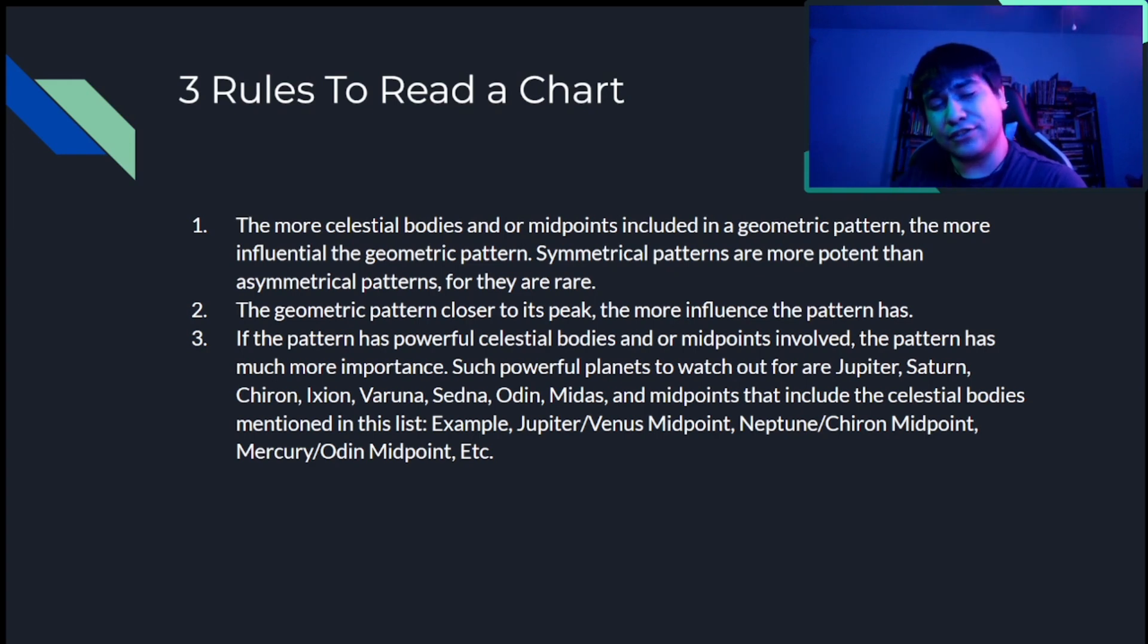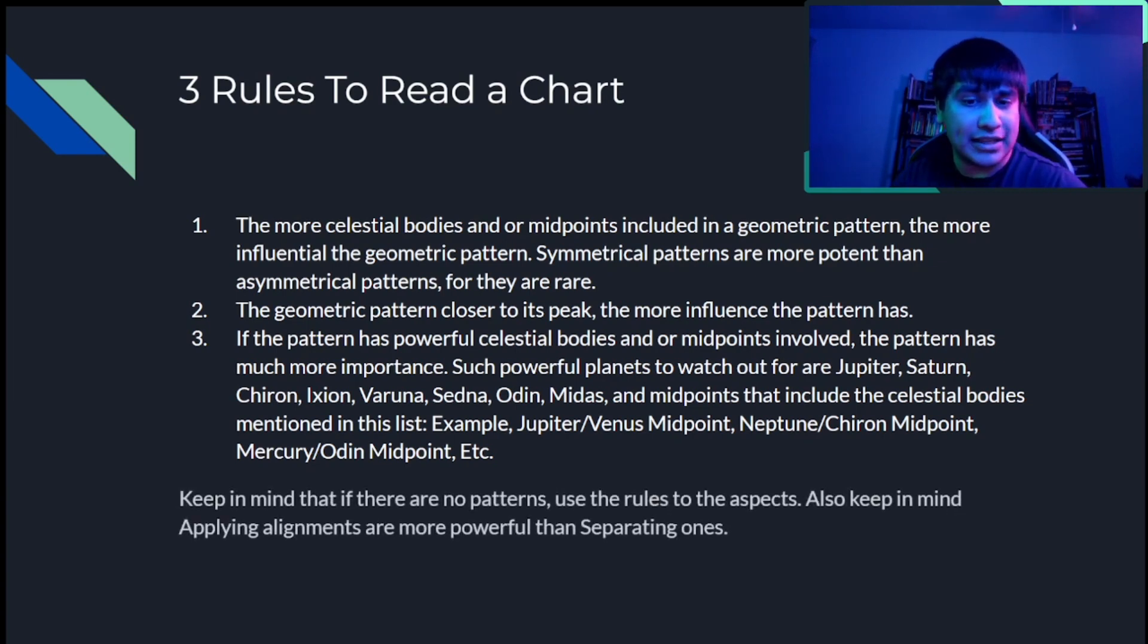And if the pattern is more considered applying, it will very much be more potent compared to if the alignment begins to separate. Now, if the pattern also has very powerful celestial bodies and or midpoints included, such as Saturn, Jupiter, Chiron, Exion, and so forth, as you see here, or any midpoints that enclose the celestial bodies or a combination of the two, for example, like a Saturn-Jupiter midpoint or something of that sort, then it's something that definitely makes it more important and should be kept noted. Also, of course, keep in mind, in the event if any planetary geometry isn't really involved or it's not present whatsoever, then you must apply the two rules to the aspects alone.